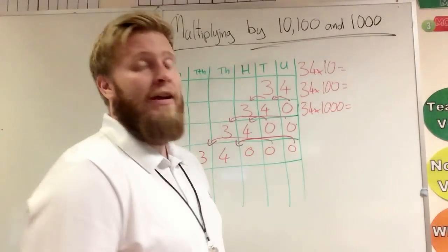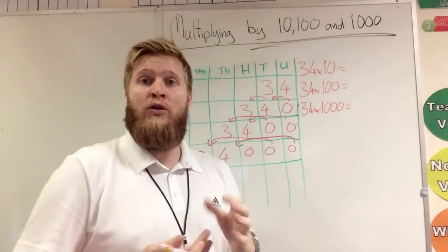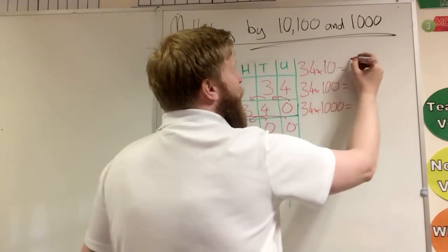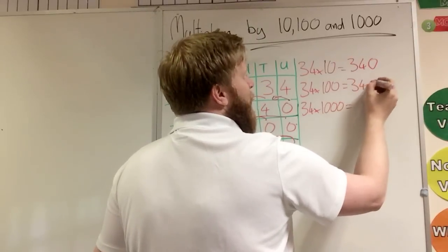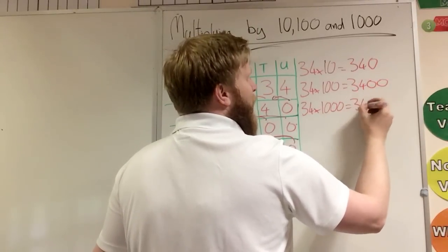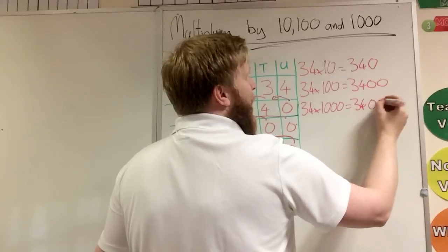A real lot of people think, which is in a way true, is if we're times by ten, we can add one zero. If we're times by a hundred, we can add two zeroes. And if we're times by a thousand, we can add three zeroes.